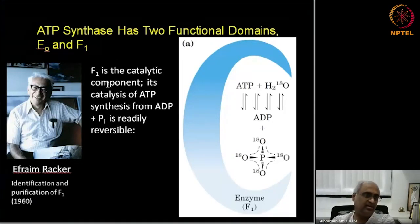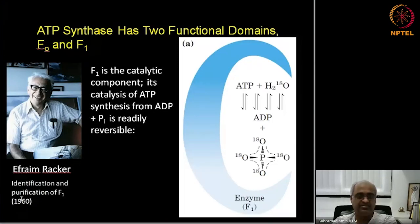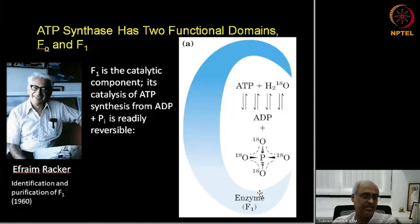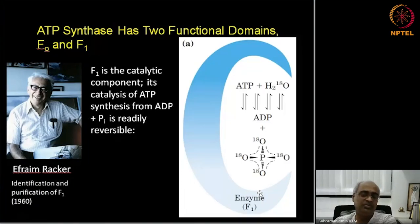F₁, the catalytic component, was first purified and shown to have catalytic activity by Ephraim Racker in the 1960s. An interesting experiment he performed led to a conundrum about how F₁ ATP synthase works — a problem that was not solved until the mid-1990s, 35 years later. Solving it required crystallography and a conceptual leap, not an incremental process.